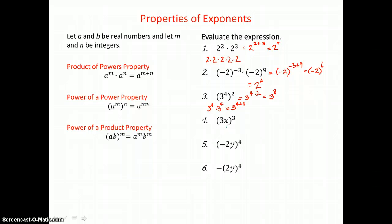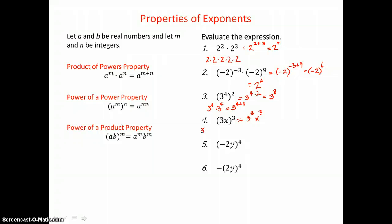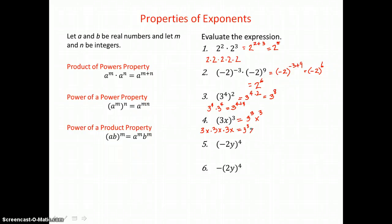In our fourth example, we have a product raised to a power. When we have a product raised to a power, we want to use the power of a product property and raise every factor inside parentheses to that power outside. We can show it by expanding, because we have 3 factors of 3x in this product — that's 3 factors of 3 and 3 factors of x. So we get 3 cubed times x cubed.